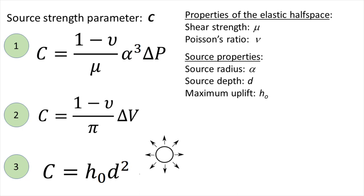Equation number 2 is an alternate expression, equally valid, that shows that the source strength can also be written in terms of the volume change of the spherical source denoted by delta V. This is a somewhat simpler representation, as it only depends on the volume change of the source and the Poisson's ratio.